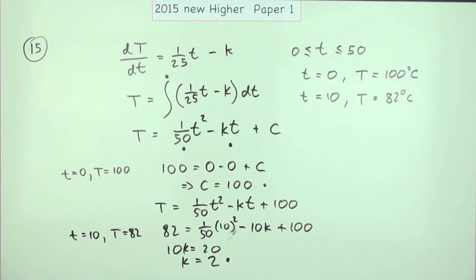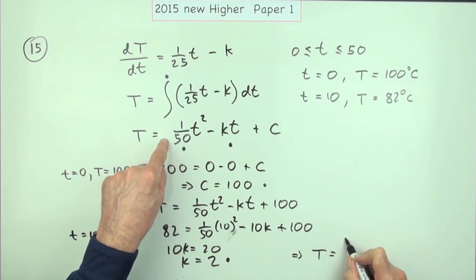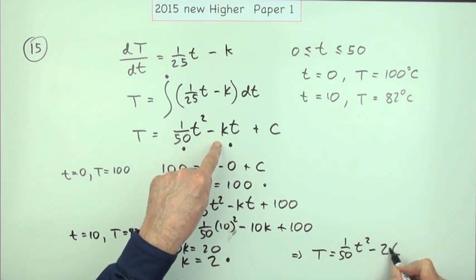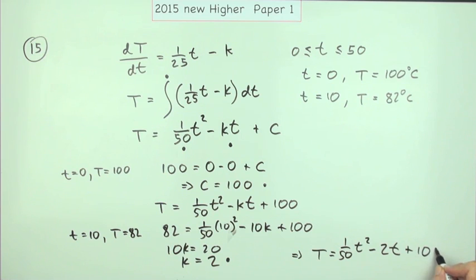That was a mark. Then finally, for the sixth mark, it was just a case of put it all back together. Finally we can see: T equals one-fiftieth of t squared minus 2t plus 100. That was the sixth mark.